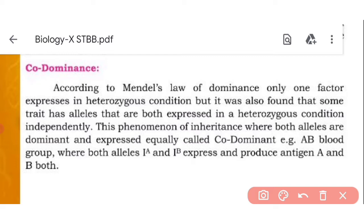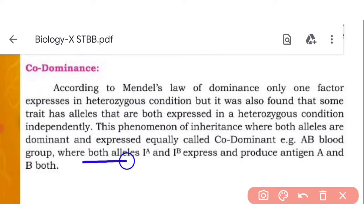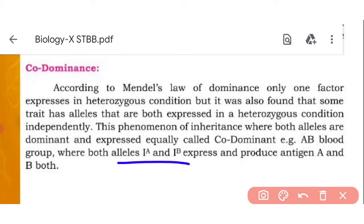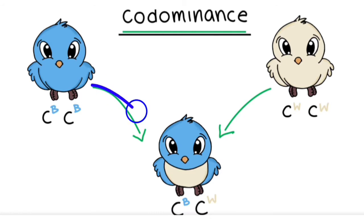For example, if a person has blood group genes A and B, both alleles A and B are expressed and produce antigens. Both are not masked — not one character masking the other — but both separate alleles are equally dominant and equally express themselves. This is co-dominance, illustrated by blue and white colors being equally expressed in the next generation.